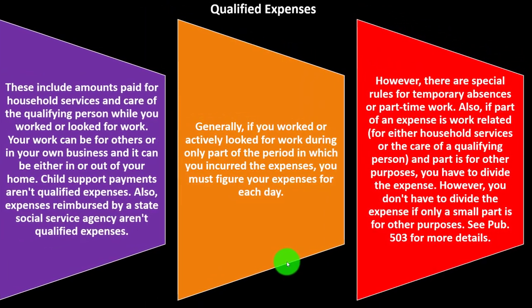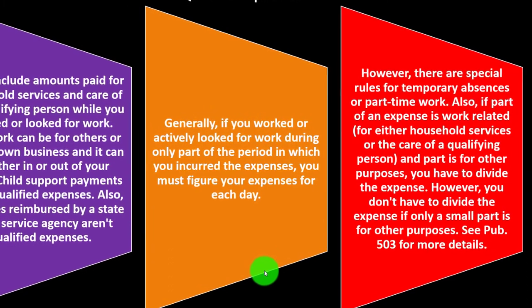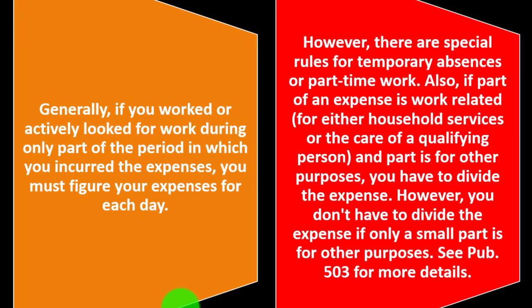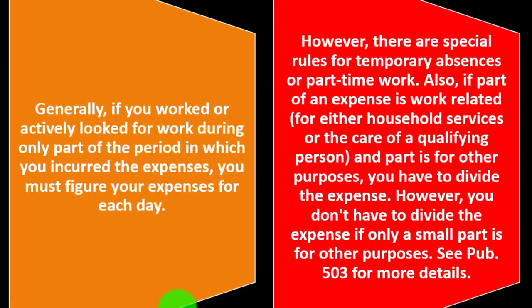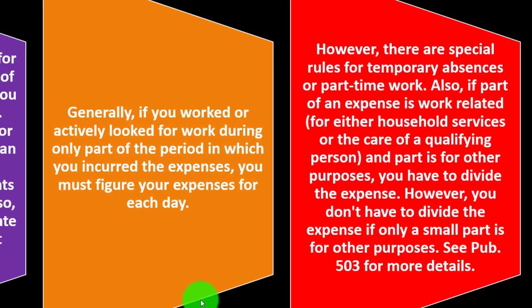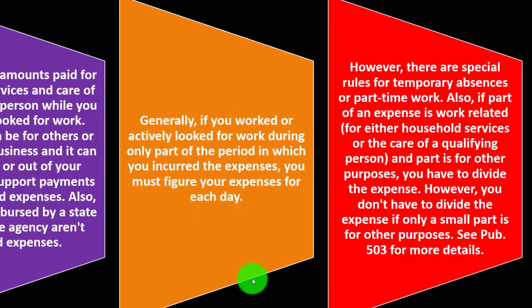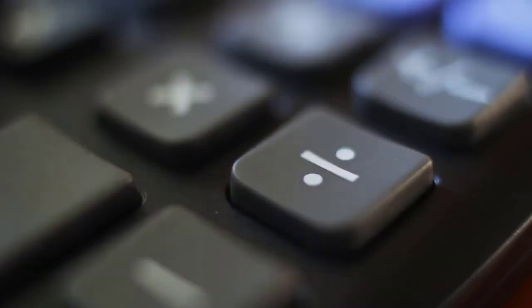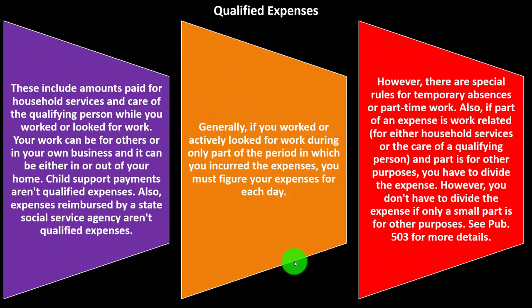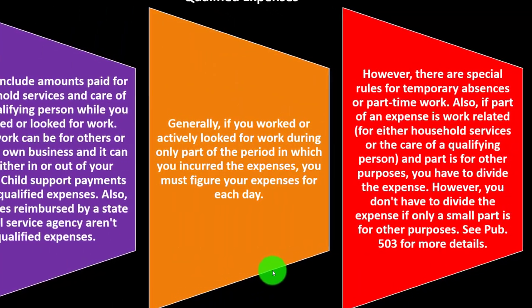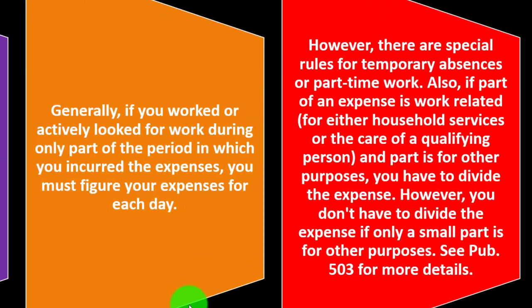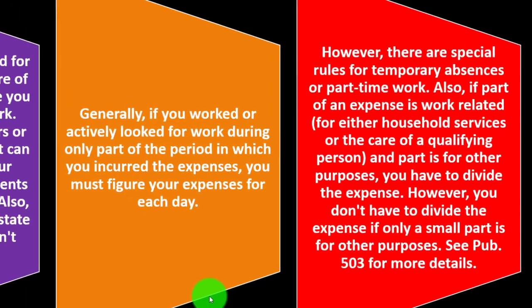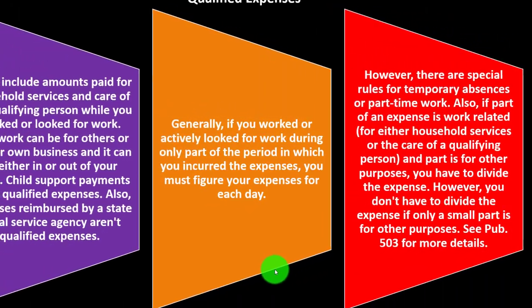If part of an expense is work-related for household services or care of a qualifying person and part is for other purposes, you have to divide the expenses to allocate. However, you don't have to divide the expenses if only a small, non-material part is for the other purpose. See Publication 503 for more details.